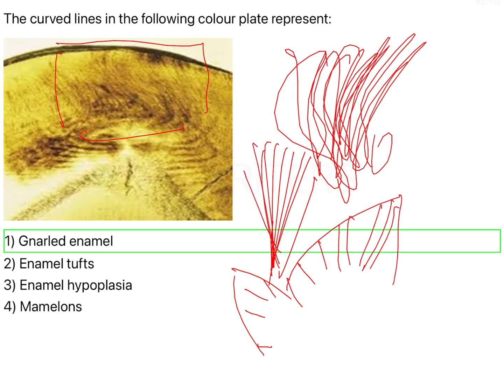Why incisal edges and why cusp tips? Because these are very strong force-bearing areas. Your cusps bear the force, as well as your incisal edges bear the forces of mastication or biting. These areas need to be toughened or stronger in order to bear the brunt of those forces.